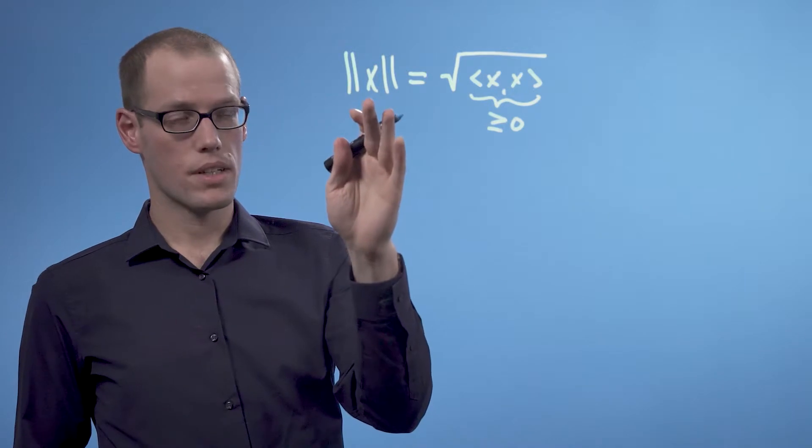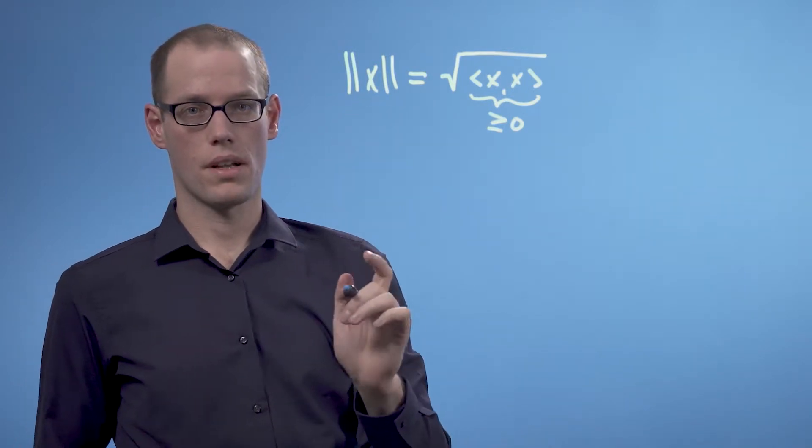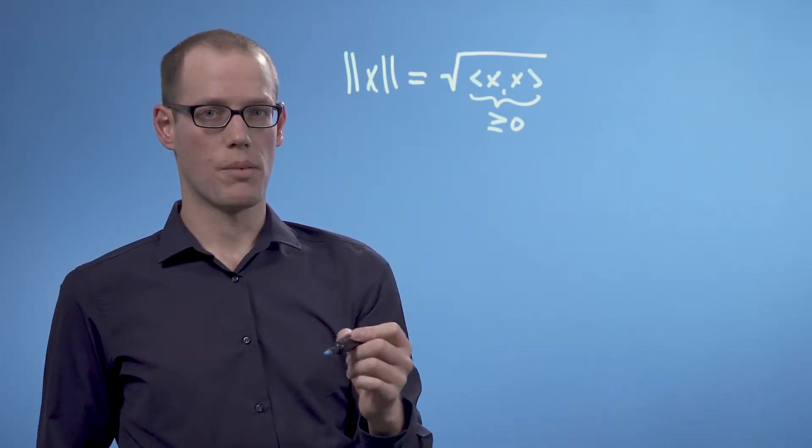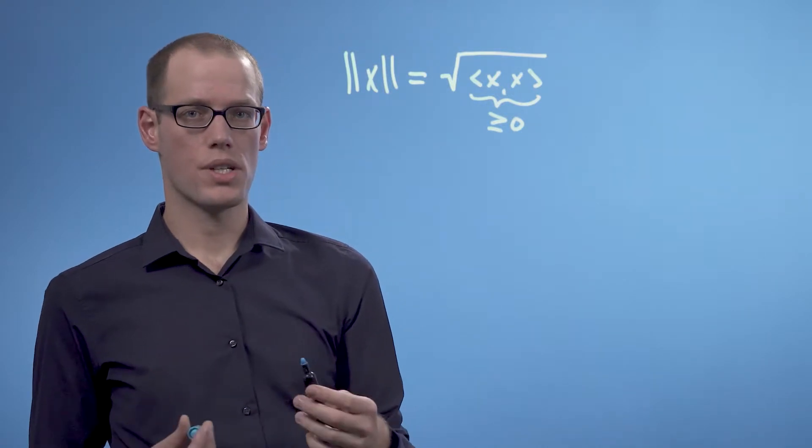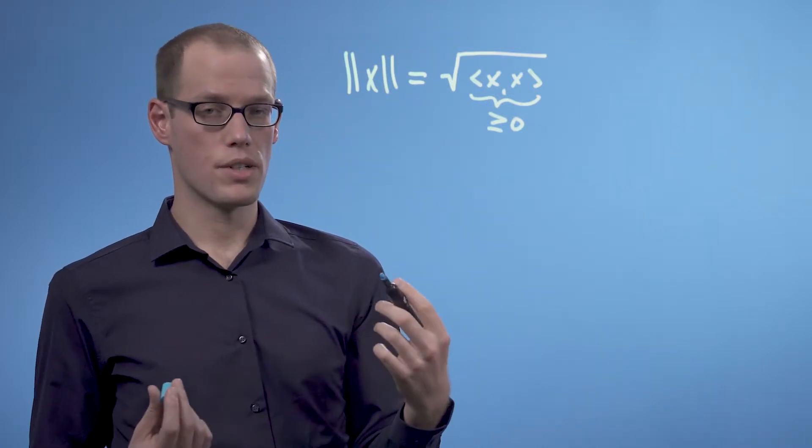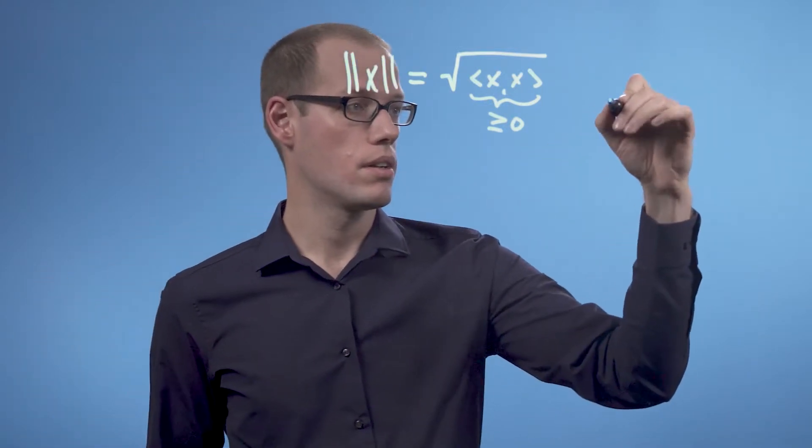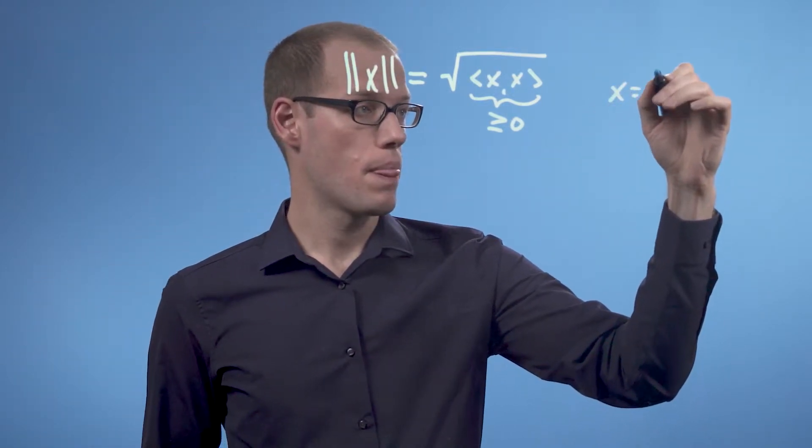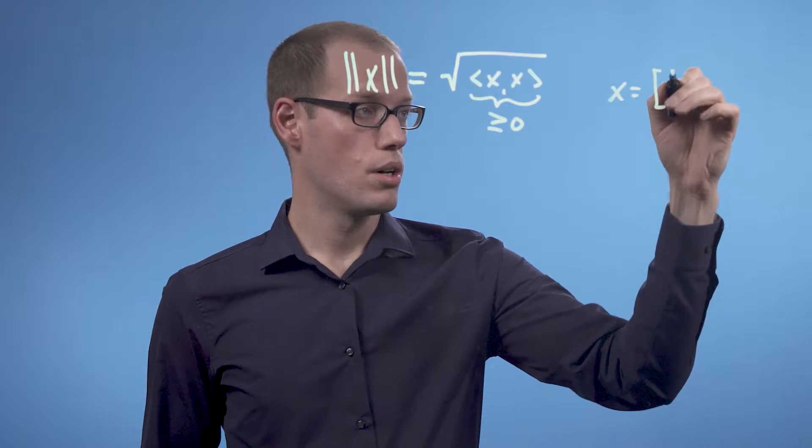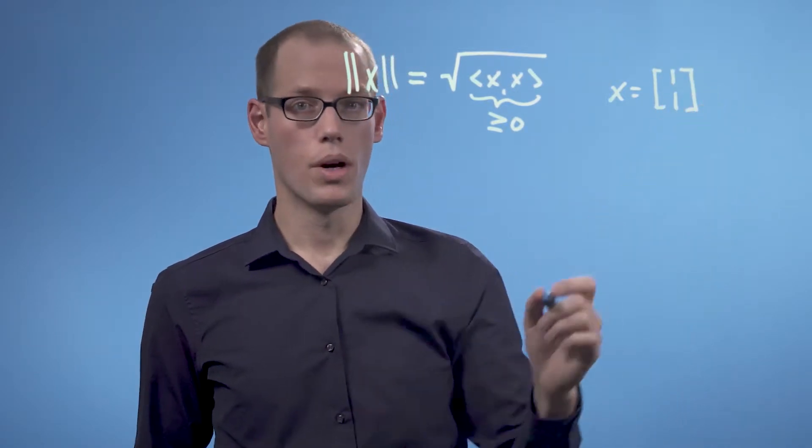The length of x is also called the norm of x. So let's have a look at an example. Assume we are interested in computing the length of a vector in two dimensions, and x is given as the vector [1, 1].